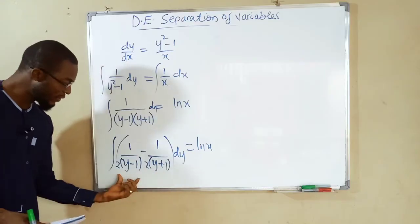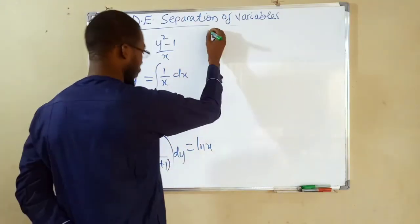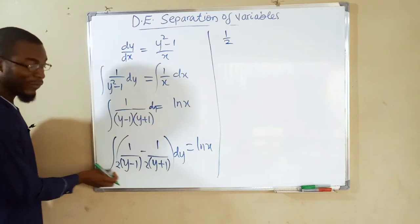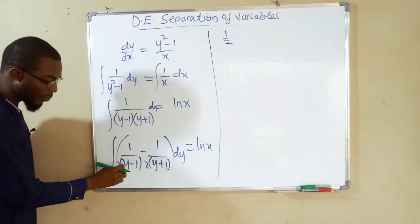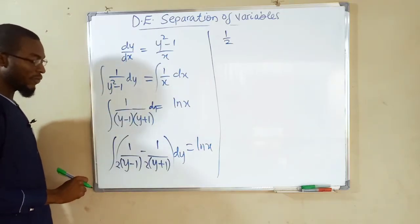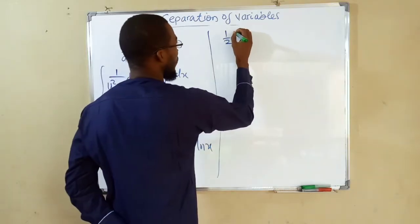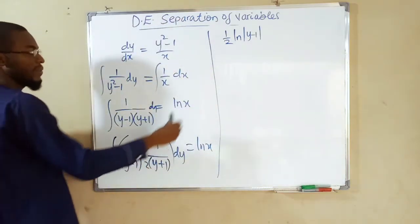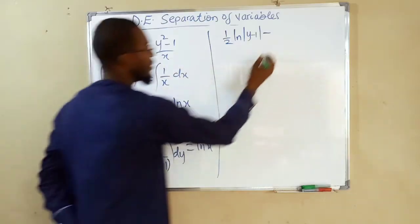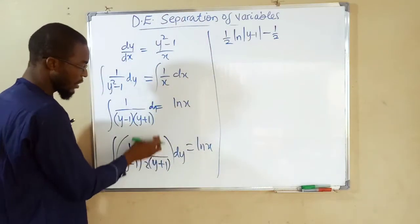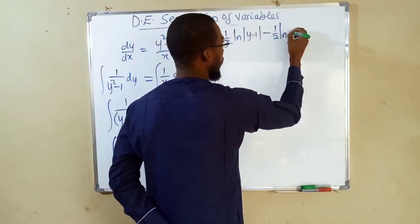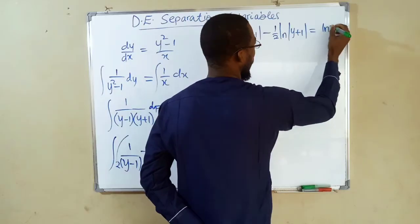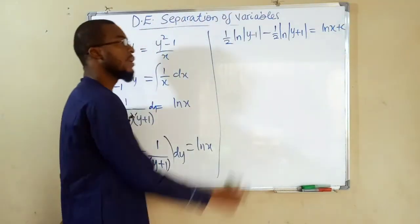Integrating independently: (1/2)ln|y − 1| minus (1/2)ln|y + 1| equals ln|x| plus the constant of integration. This is the general solution. We can factor out 1/2 to write (1/2)·ln|(y − 1)/(y + 1)| = ln|x| + c.